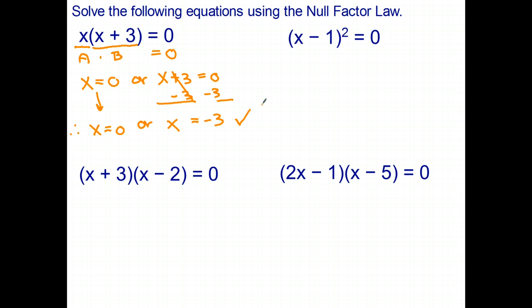Okay, let's have a look at a second example. Here we have x take one in brackets all squared equals zero. So what you might want to do is just write that out in expanded form to make it look like a times b. So I can write it out like so. And we have x minus one times x minus one equals zero. So that's a, that's b.